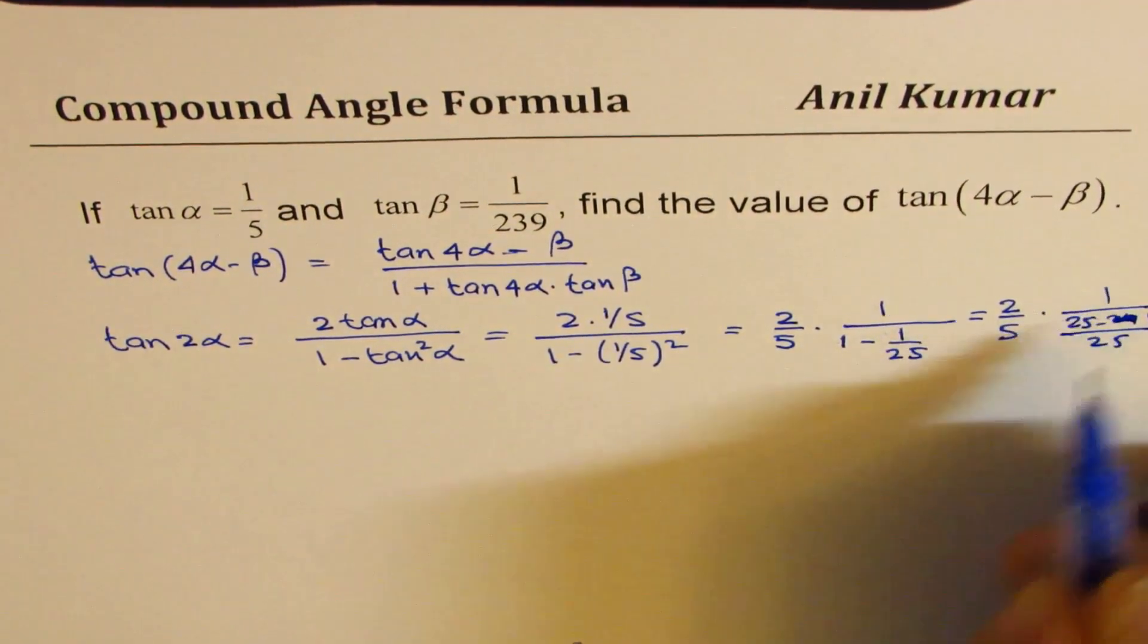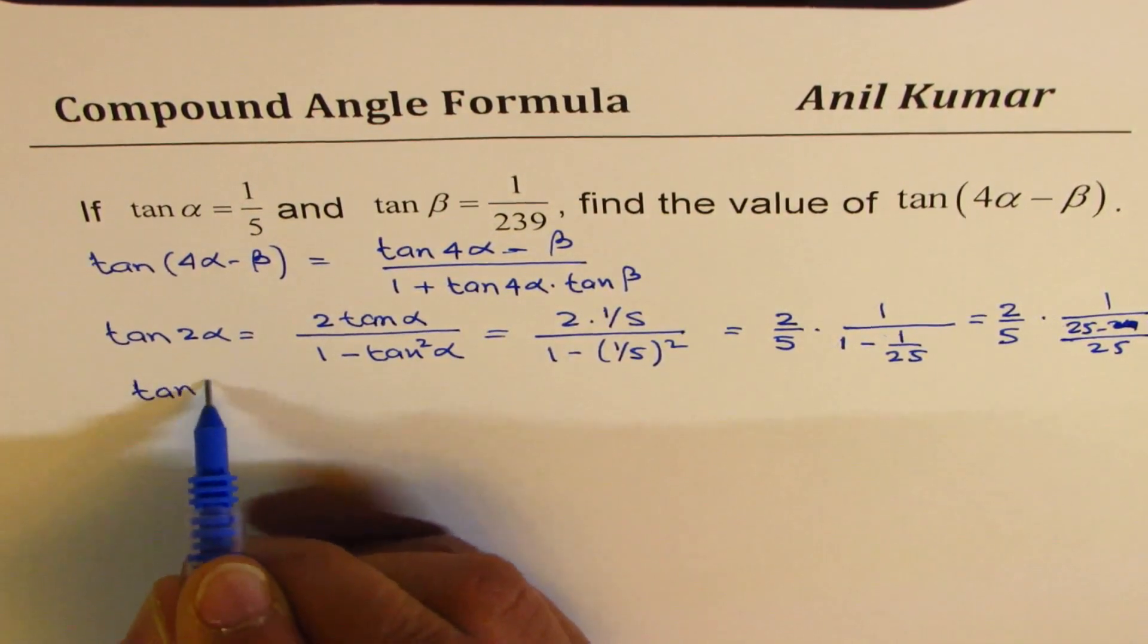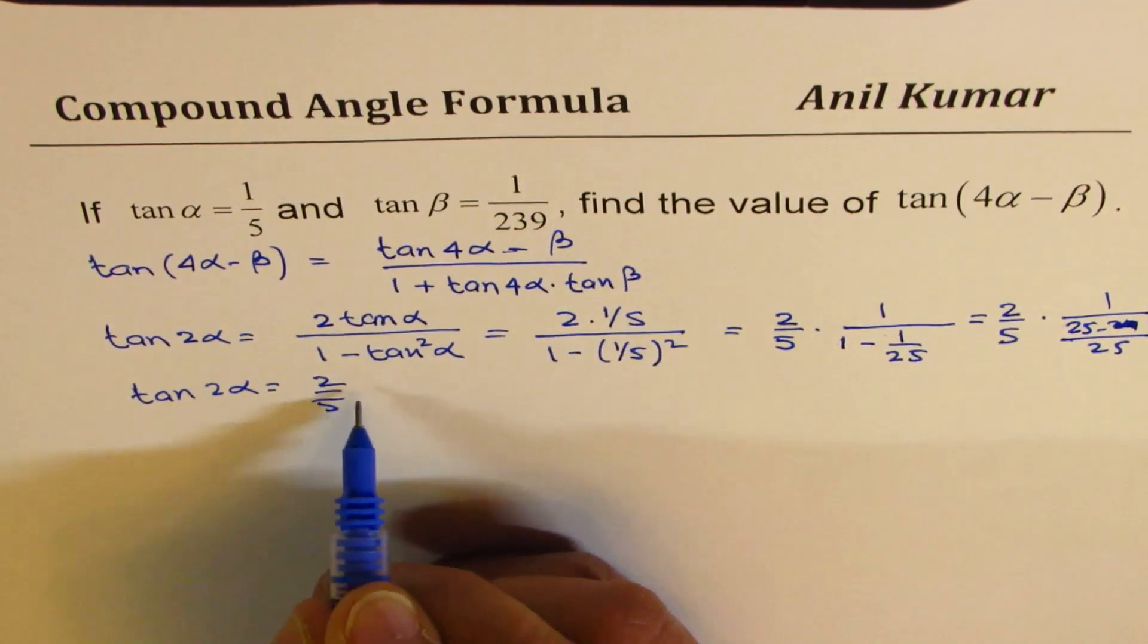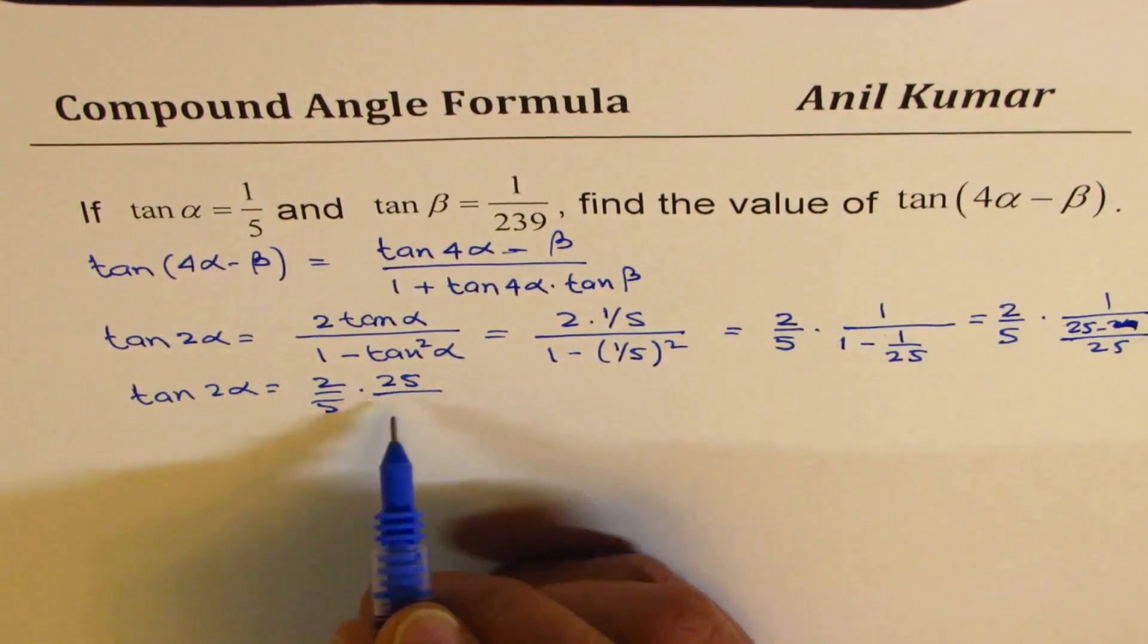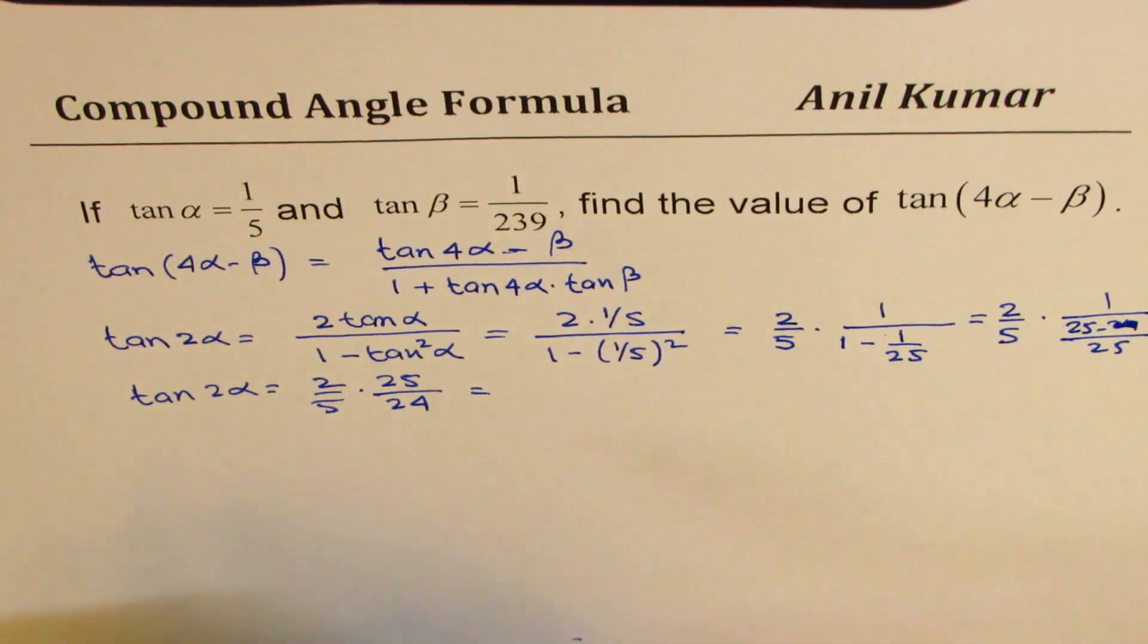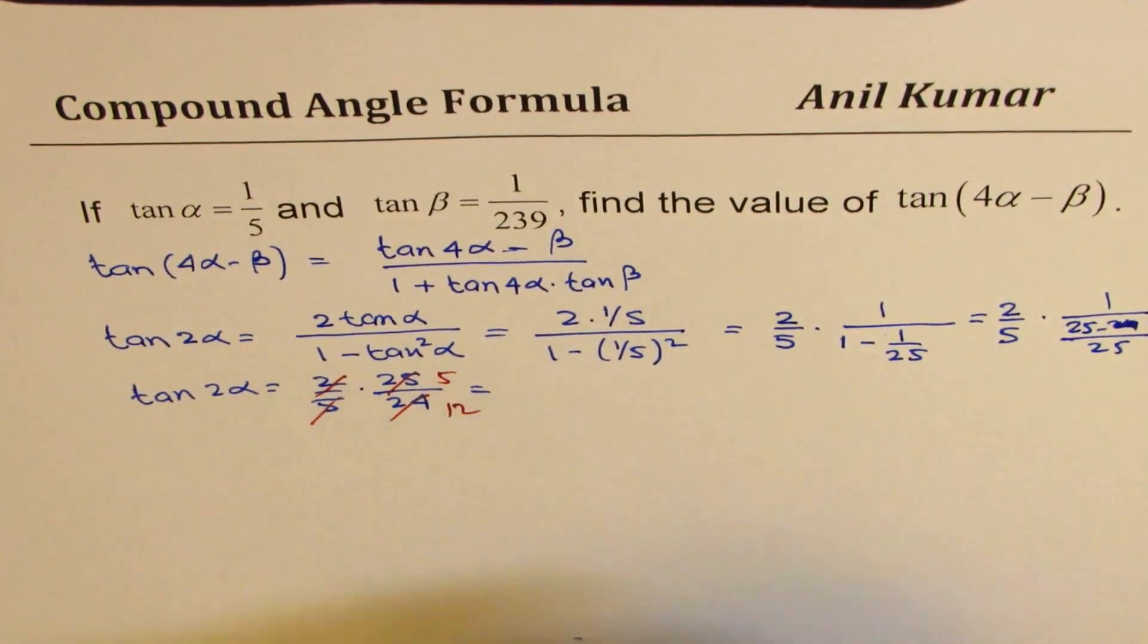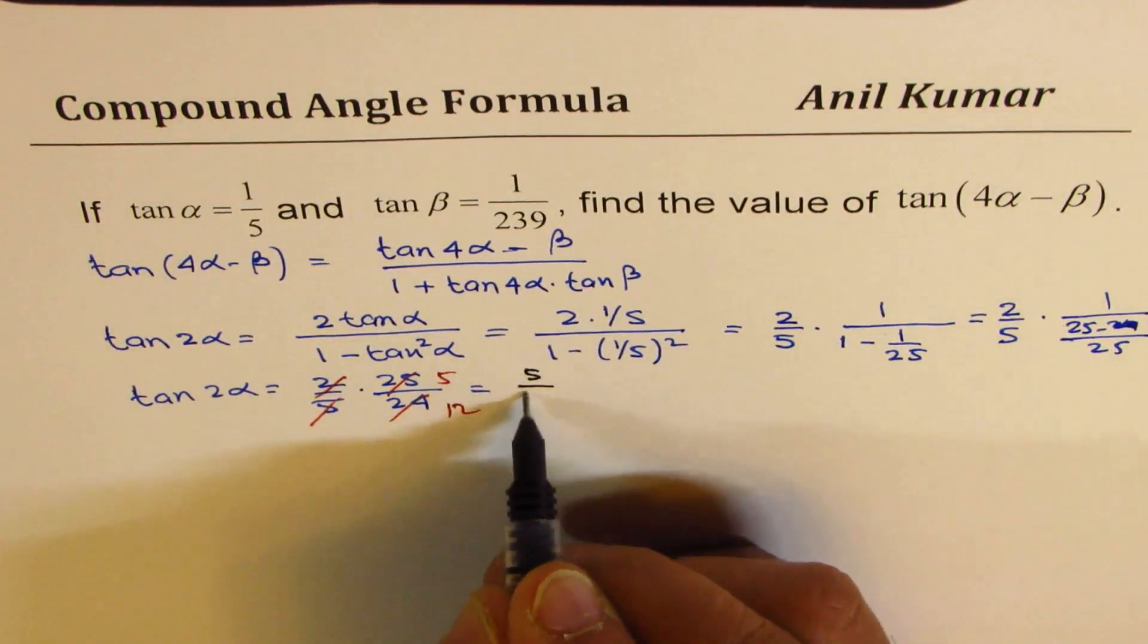So what we get here is tan 2 alpha equals 2 over 5 times 25 divided by 25 minus 1 is 24. This we can simplify, cancelling 5 and this by 12. So we get tan 2 alpha as 5 over 12.